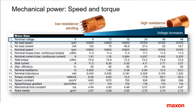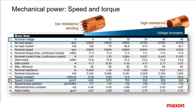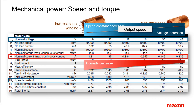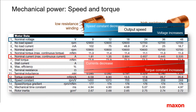The increasing voltage over the winding series is counteracted by the decreasing speed constant. As a result, similar output speed can be reached with the different windings. An analogous statement can be made about current: the lower current of the high resistance winding is compensated by a higher torque constant, resulting in the same output torque.